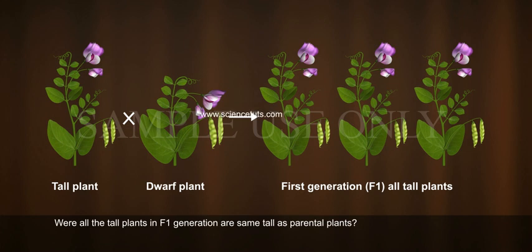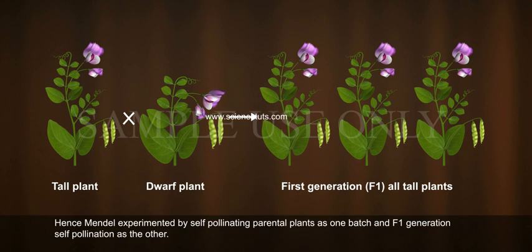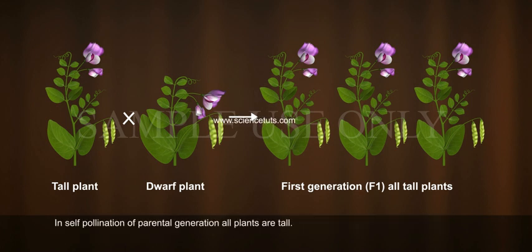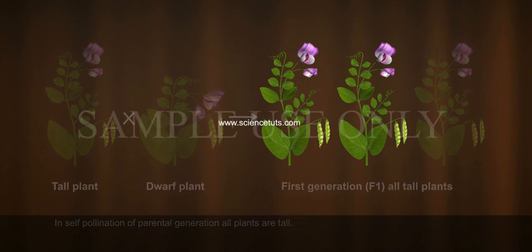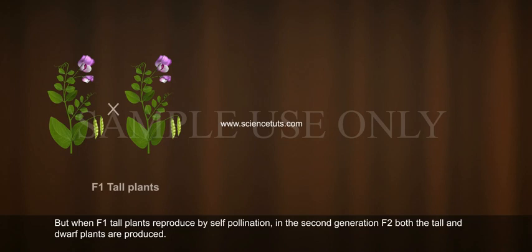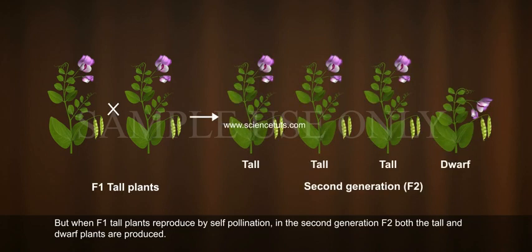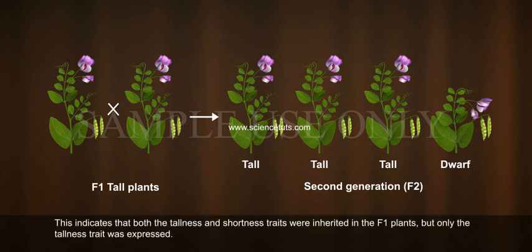Were all the tall plants in the F1 generation the same height as the parental plants? Mendel experimented by self-pollinating parental plants as one batch and F1 generation plants as the other. In self-pollination of the parental generation, all plants were tall. But when F1 tall plants reproduced by self-pollination, in the second generation F2, both tall and dwarf plants were produced. This indicates that both tallness and shortness traits were inherited in the F1 plants, but only the tallness trait was expressed.